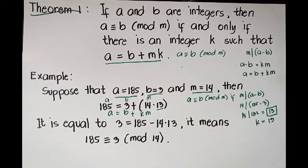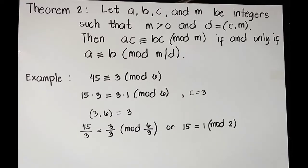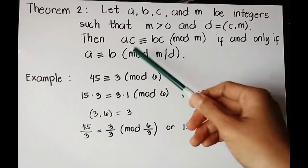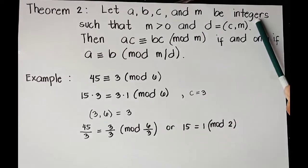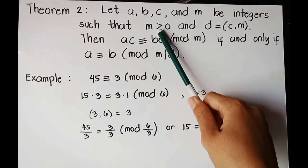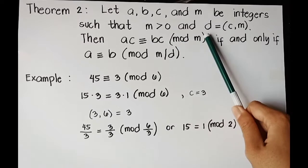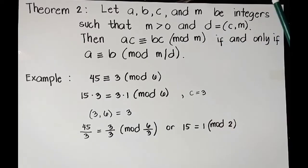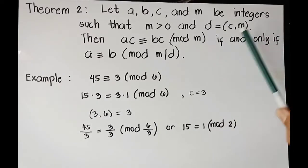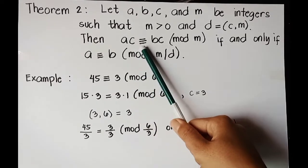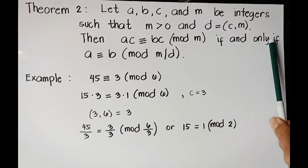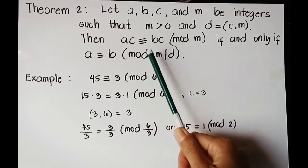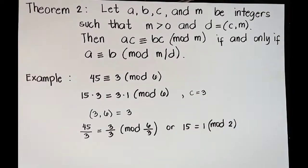Now let's proceed to Theorem 2. Theorem 2 states that let a, b, c, and m be integers such that m is greater than 0 and d equals gcd(c, m). Then ac congruence bc mod m if and only if a congruence b mod m divides d.